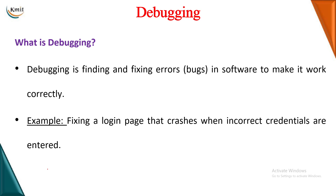Now let us talk about debugging. Debugging is a process of finding and fixing errors inside the software. For example, if on a login page you enter a wrong password and the page crashes, your debugging should find the problem and fix it — like giving you an option to click 'forgot password' and re-type a new password.